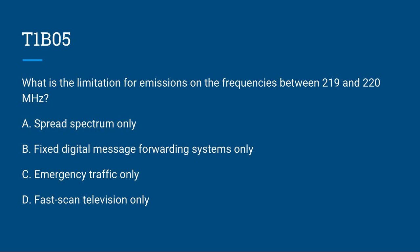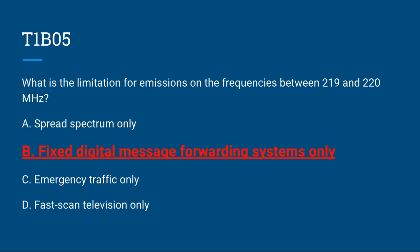T1B05: What is the limitation for emissions on the frequencies between 219 and 220 MHz? A, spread spectrum only; B, fixed digital message forwarding systems only; C, emergency traffic only; or D, fast scan television only. The correct answer is B, fixed digital message forwarding systems only.